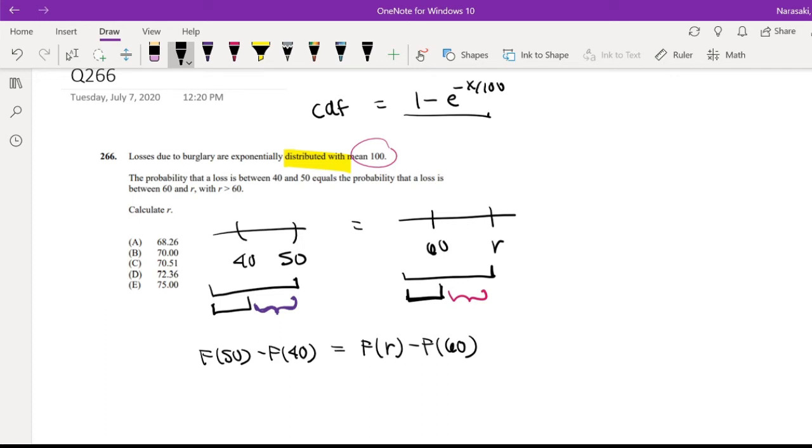So I'm going to plug in that 50 for x here. So this is equal to 1 minus e to the negative 50 over 100 minus 1 minus e to the negative 40 over 100 is equal to F of R, which is just equal to 1 minus e to the negative R over 100 minus 1 minus e to the negative 60 over 100.